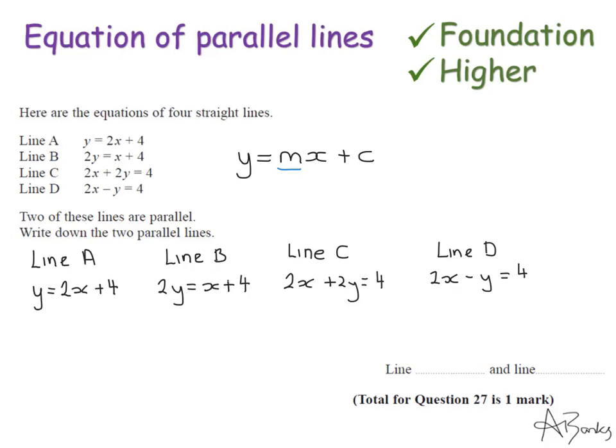So line A, they've already given me in this form, y equals 2x plus 4. Line B, I'm going to have to divide everything by 2 so that I have 1y. So y equals a half x plus 2.